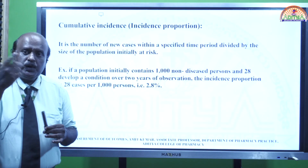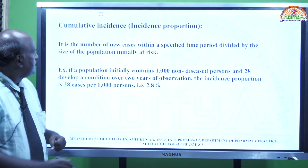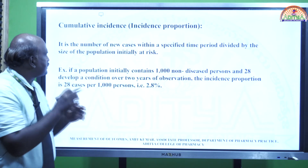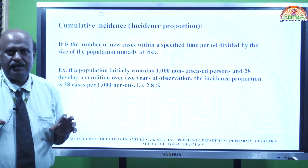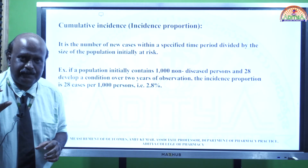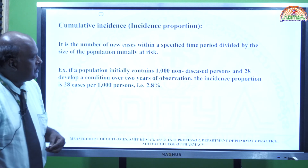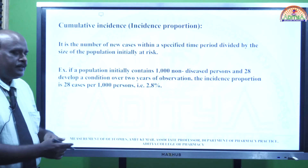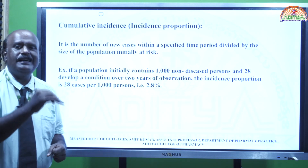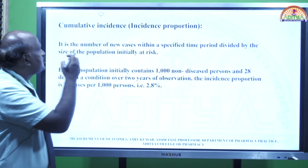Cumulative incidence, also called incidence proportion, is the number of new cases within a specified time period divided by the size of the population initially at risk. For example, if a population initially contains 1000 non-diseased persons and 28 develop a condition over a period of 2 years, the incidence proportion becomes 28 cases per 1000 persons, which is 28 by 1000, coming to 2.8%.